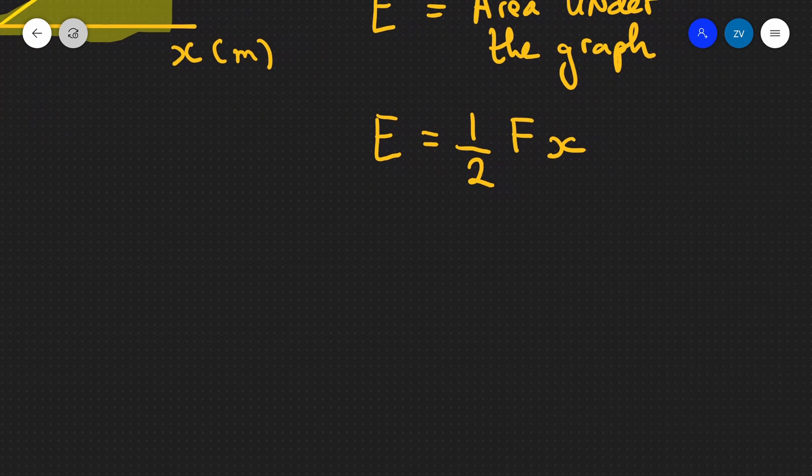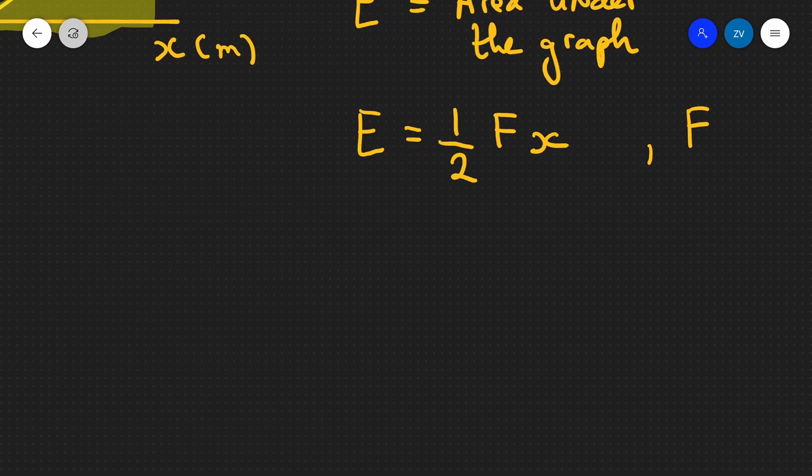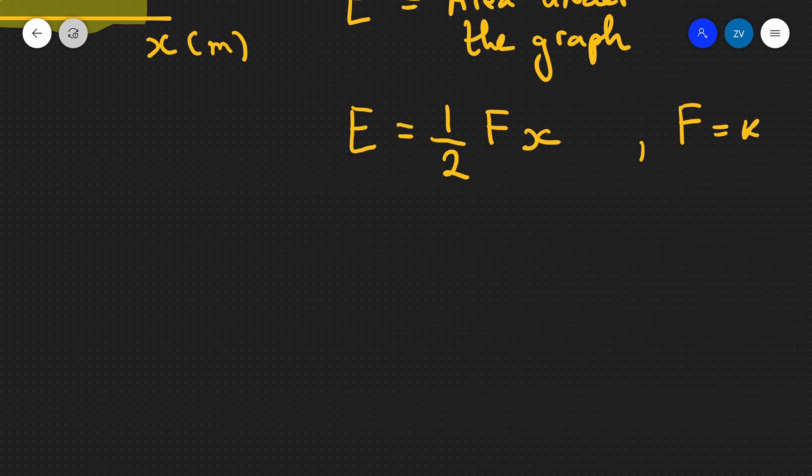However, if we remember, Hooke's law says that force is equal to Kx. We can substitute that into our original expression and get another equation for the elastic potential energy, which is one-half times Kx times x, which we can write as one-half Kx squared.